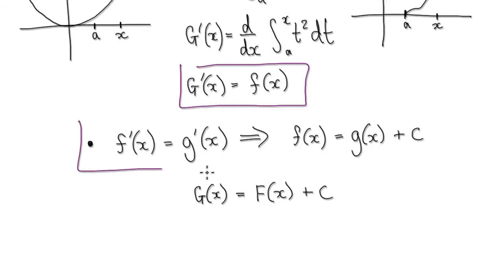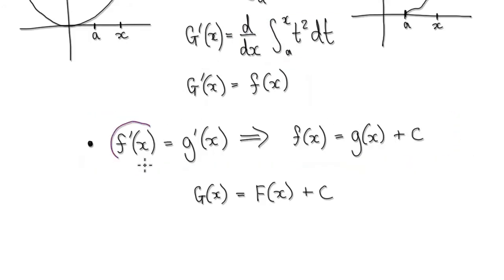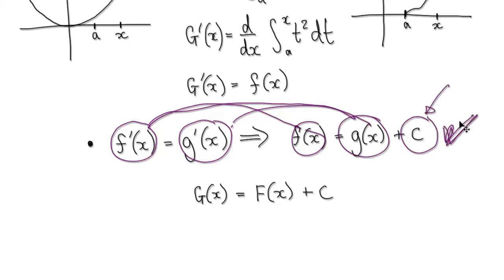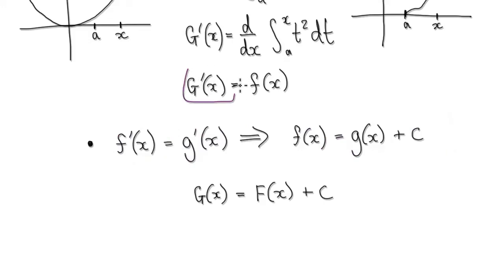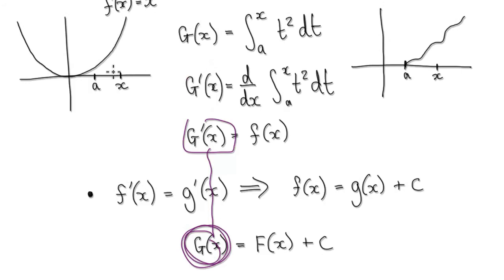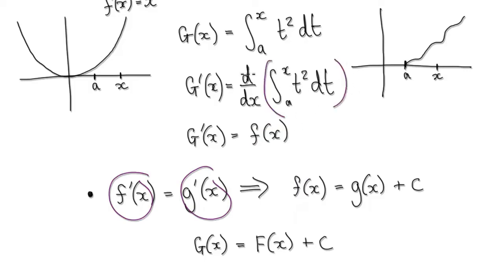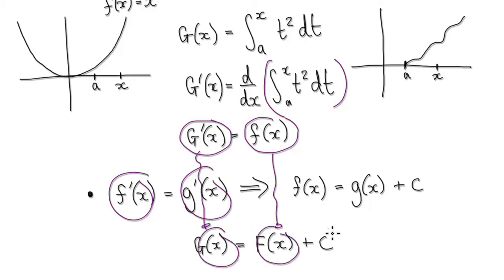Now in some of the earlier videos we've seen that if you have two derivatives that are exactly the same, then the two anti-derivatives must also be exactly the same, but differ by a constant. We know the two derivatives are exactly the same here, so the two anti-derivatives must be exactly the same, but differ by a constant.